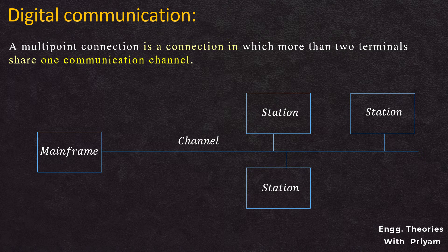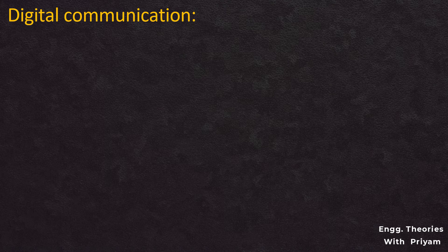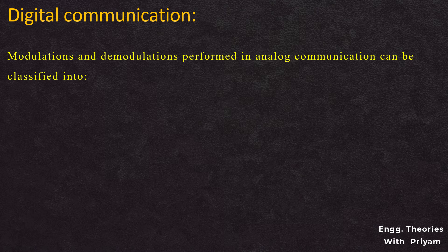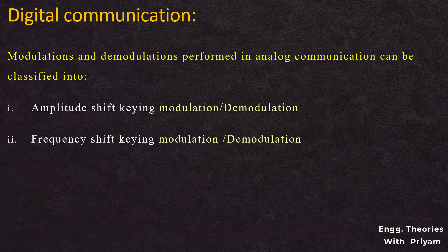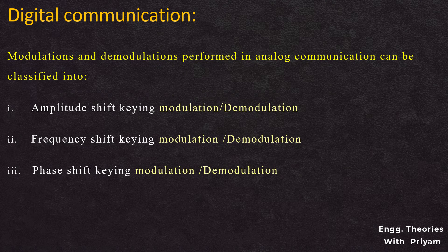Similar to analog communication, modulation is performed in the transmitter section and demodulation in the receiver section. Modulations and demodulations in digital communication can be classified into amplitude shift keying, frequency shift keying, and phase shift keying. These modulation and demodulation techniques will be discussed in detail in the digital communication lecture series, with a short discussion also in the lecture on passband and baseband transmission.